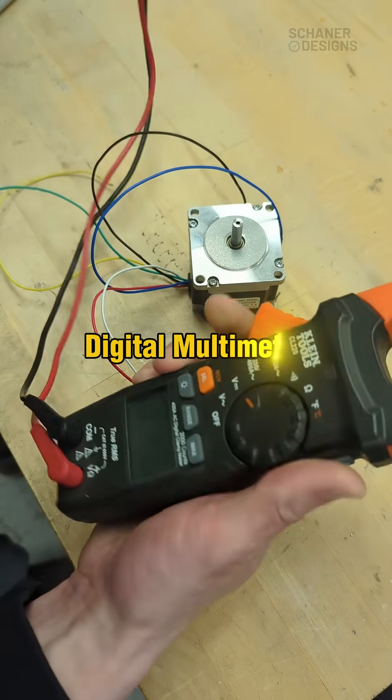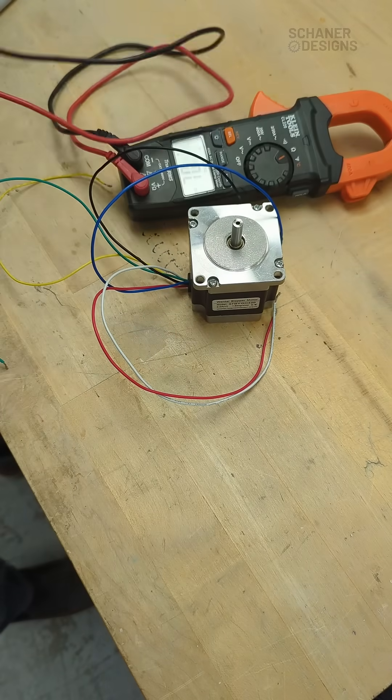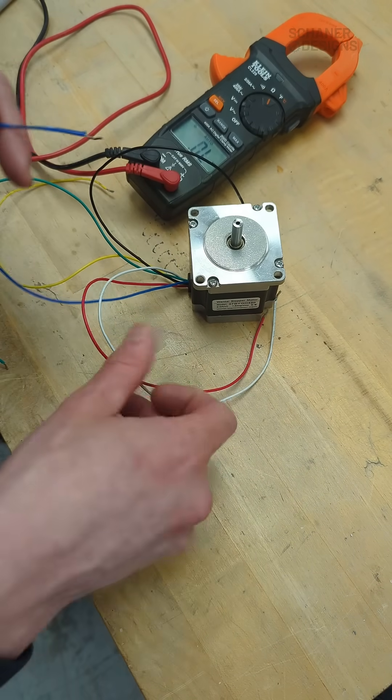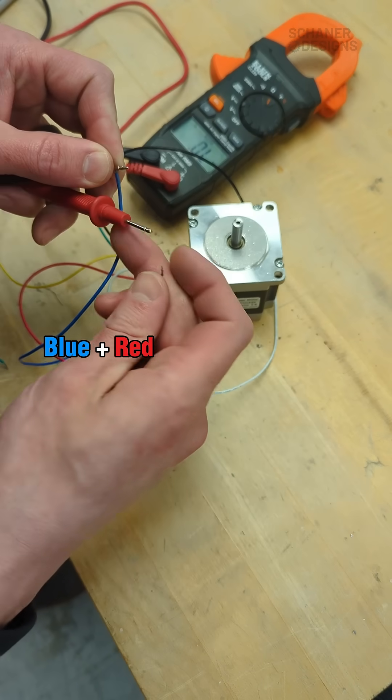So for the second method I'm gonna use a digital multimeter and set it to an ohm value so I'm measuring resistance and I'm just gonna confirm my previous assumption that blue and red go together so let's measure the resistance there.